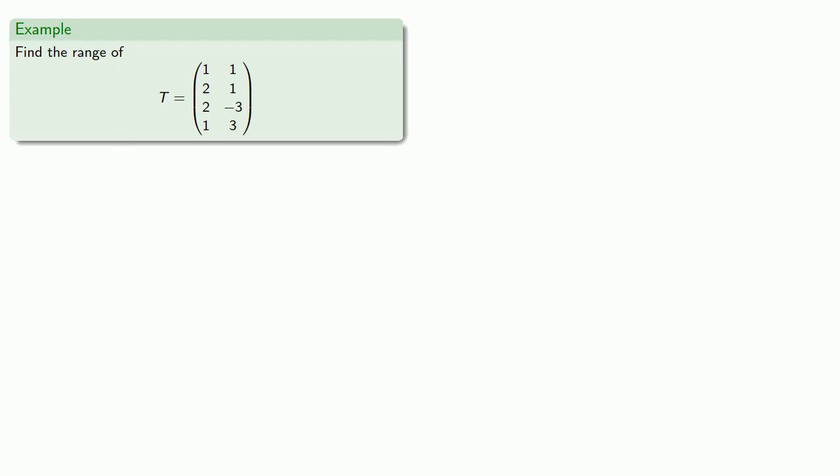So let's take a look at the range of this transformation. Since this is a 4 by 2 matrix, we know that T takes vectors in R2 and sends them to vectors in R4. So we might say that T applied to vector V1, V2 gives us vector U1, U2, U3, U4.